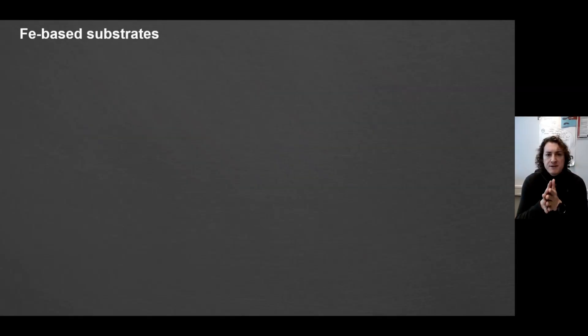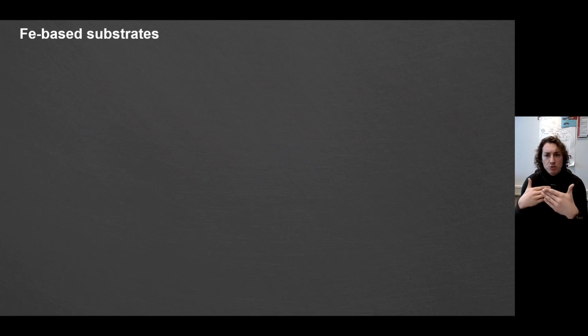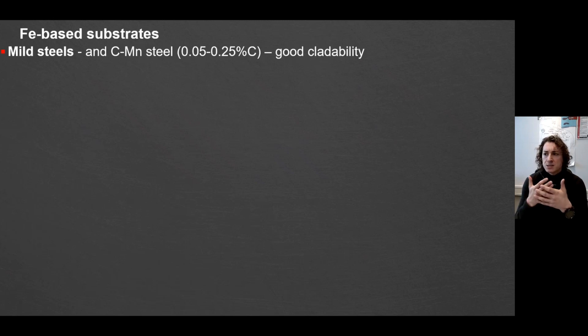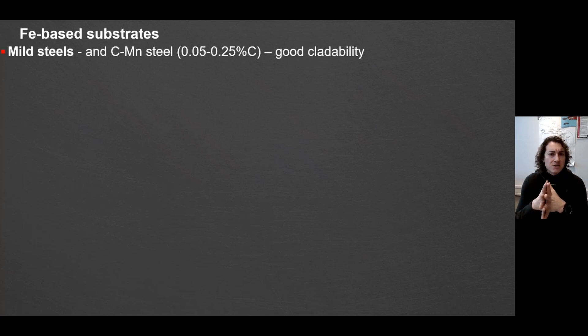We're going to look at different substrate types and what you might require when working with substrates. Mostly we work with ferrous materials as substrates, and in 90% of cases we work with iron-based substrate or base materials. What are the general rules for iron-based substrates? The less alloyed steel is a mild steel which usually has a little bit of carbon and manganese. In this case you almost always get good cladability, no matter which hard-facing or laser cladding material you put on top — there are no issues with that.